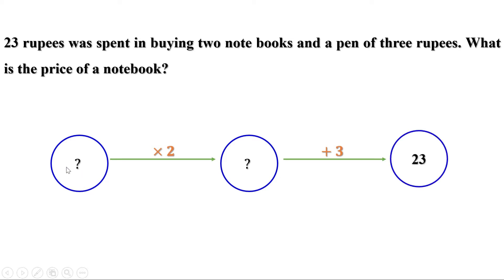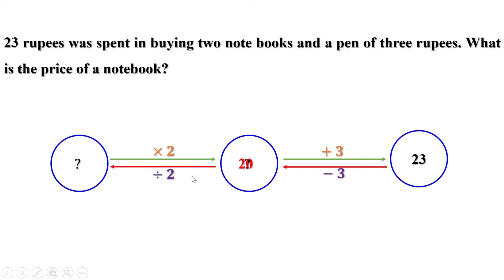Now to find the price of a notebook, let us use the method of inversion. 3 is added and we reach 23, so let us subtract 3 from 23. We get 20, which is the price of two notebooks — that is, the price of one notebook multiplied by 2. So let us divide 20 by 2 and we get 10.